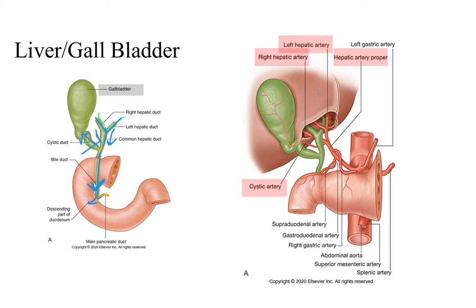The common bile duct empties into the duodenum of the small intestine and forms a junction with a duct coming from the pancreas — the main pancreatic duct — and they empty through an opening in the duodenum to aid in the chemical digestion of food. Specifically, bile aids in the chemical digestion of fats.